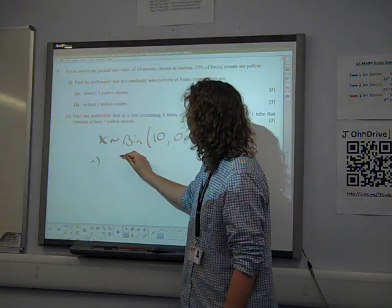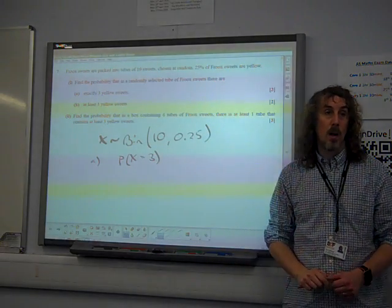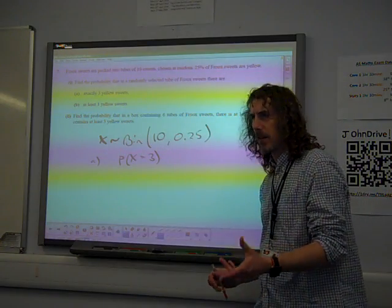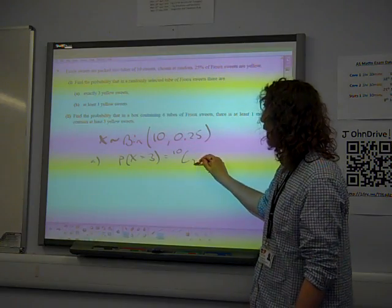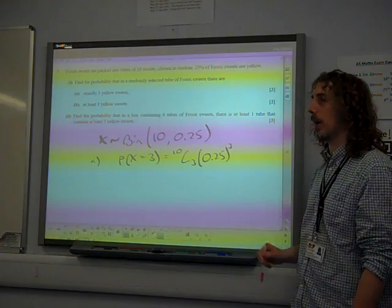So part A is asking us for the probability that x is equal to three. For a single probability, we could use the formula booklet for this, but for a single probability it's just as easy to use the formula. This is 10c3. That's three successes, so 0.25 cubed.